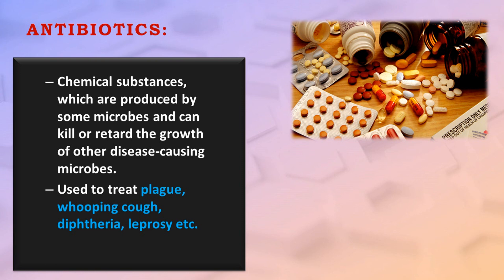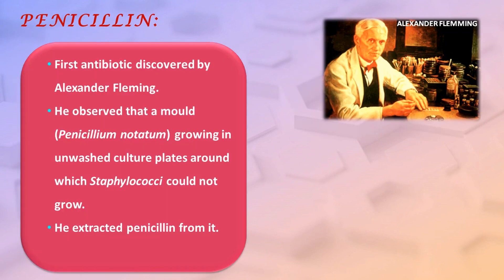Antibiotics are chemical substances produced by some microbes that can kill or retard the growth of other disease-causing microbes. They are used to treat plague, whooping cough, diphtheria, leprosy, etc. Penicillin was the first antibiotic, discovered by Alexander Fleming. He observed that a mold, Penicillium notatum, growing in unwashed culture plates, caused Staphylococci around it to not grow, and he extracted penicillin from it.